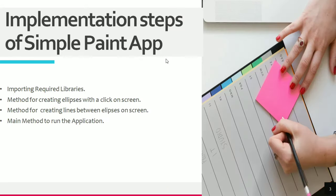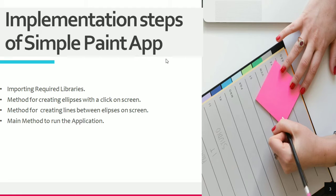Now let us look at the implementation steps of the simple paint app. First, we need to import the required libraries. Second, we need to create a method for creating ellipses with a click on the screen. Third, we need to create a method for creating lines between those ellipses. The last step is creating a main method to run the application, which will tie the two methods together.